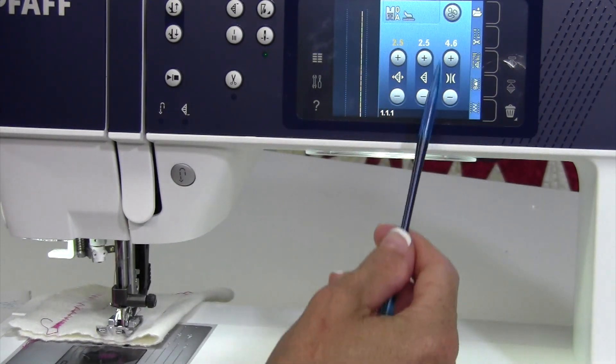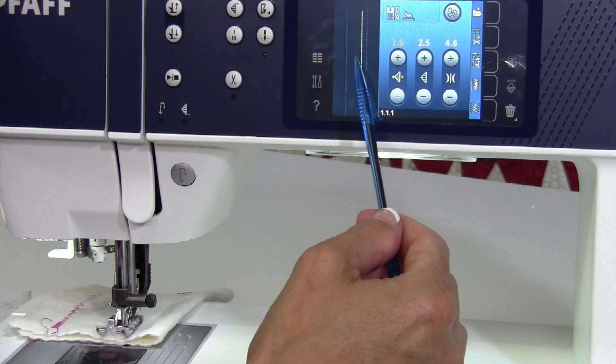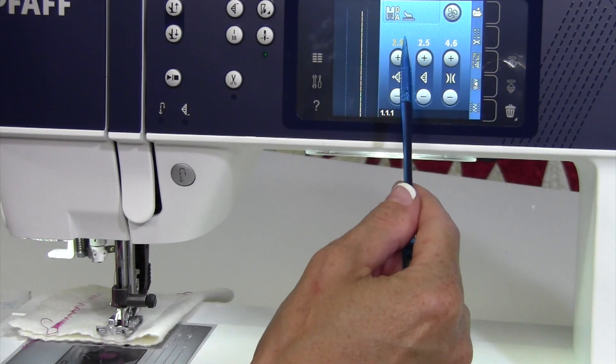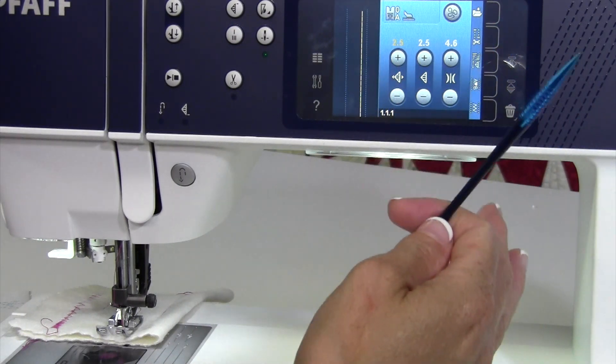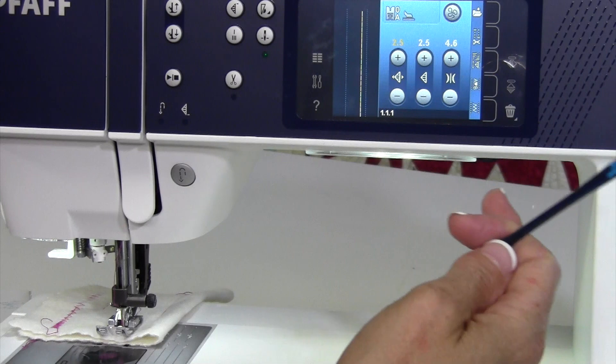Then I would have that preset. Now I could also save that setting if that's something I need to remember and I don't want to write down on a sticky note. There is a way to save this and retrieve it as your favorite needle position for this project.